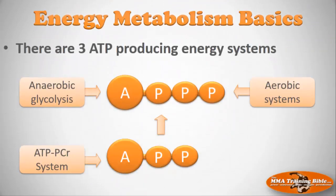There are three basic ways of producing more ATP — three different energy systems, all based on enzymatic reactions in the body. First is the ATP-PCR system, which moves ADP back to ATP. Second is anaerobic glycolysis, which can generate ATP. Third is the aerobic energy system, which also generates ATP. These are what we'll cover in this lecture.